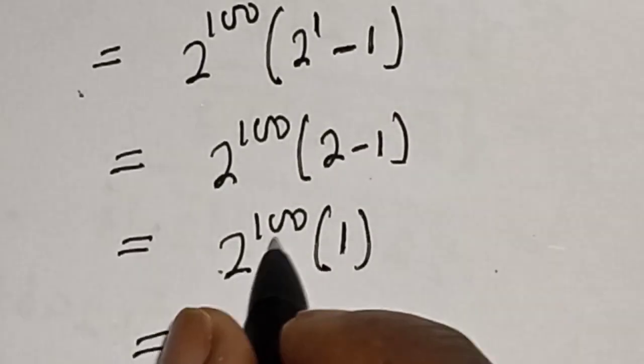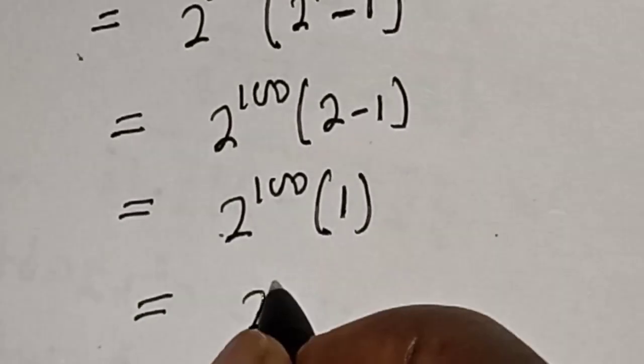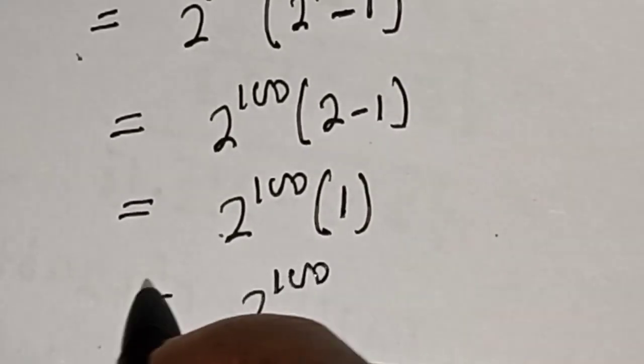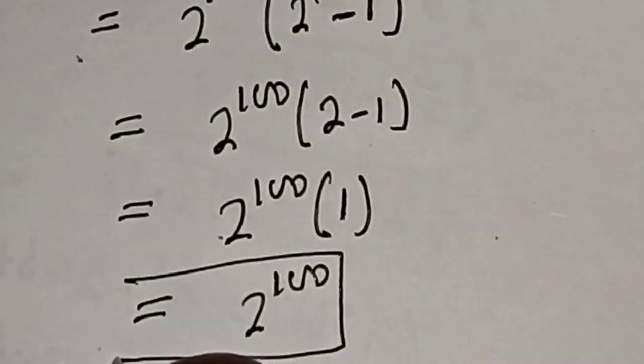This equals 2 raised to power 100 times 1, which is 2 raised to power 100. This is the final answer.